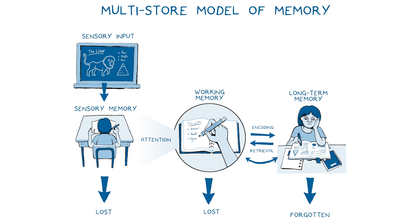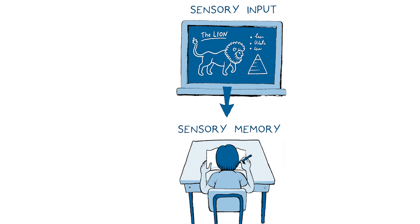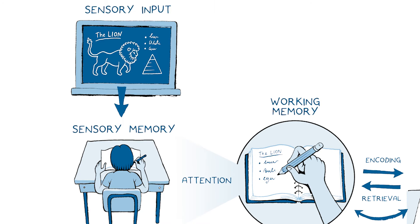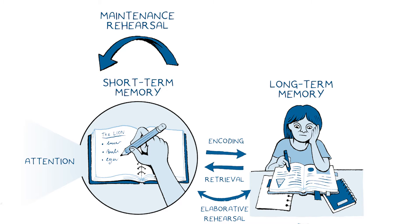We'll begin by reviewing the elements of the simple model of memory we described in earlier sessions. Incoming information is perceived by our senses and winnowed down by our attentional filters. As this information enters working memory, it can begin to be processed in interaction with long-term memory. If it's not, within a relatively short period of time it will be lost, since our working memory lasts usually less than 30 seconds.